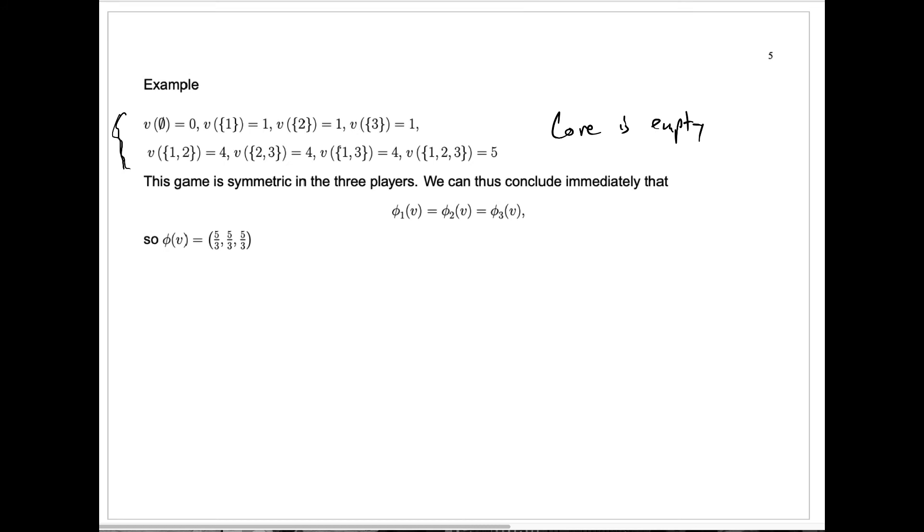Player one, player two, and player three each add the exact same amount as any other one when you add it to any coalition. If you add one to the empty coalition, that adds one to the value. The same is true for player two, the same is true for player three.